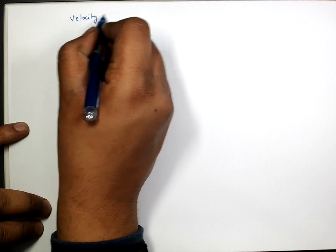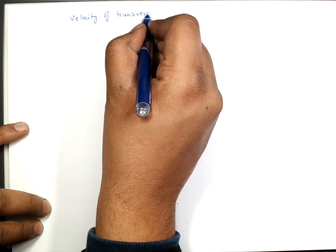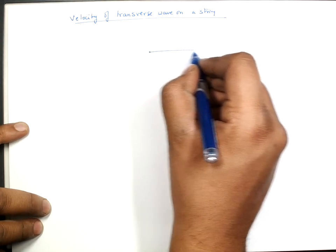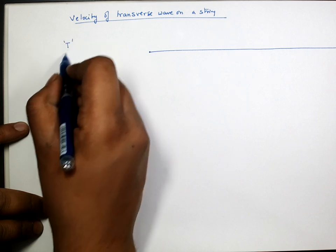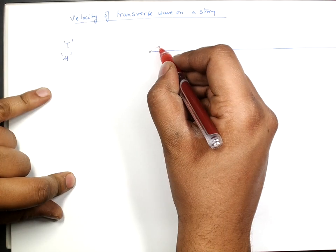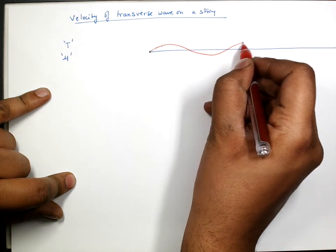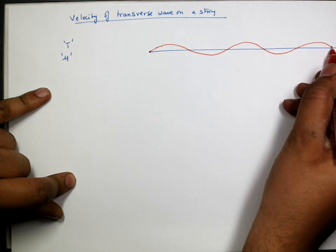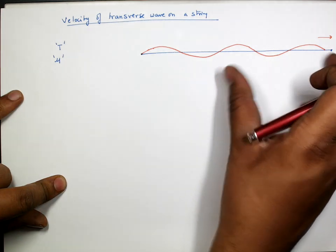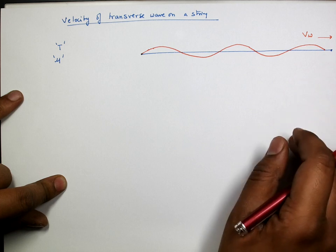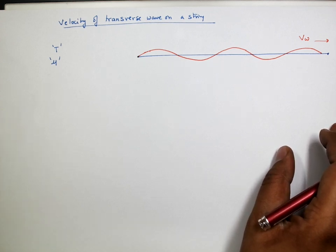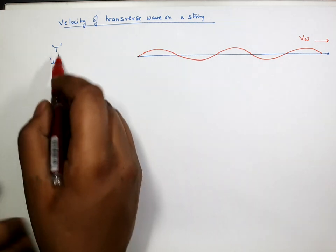In this video we look at the velocity of a transverse wave on a string. Suppose we have a stretched string under a tension T and with mass per unit length μ. Suppose a wave is going on this rope which has a snapshot as shown in this diagram. The entire waveform is moving with a certain velocity, and we are interested in finding the velocity of this wave in terms of tension and mass per unit length.